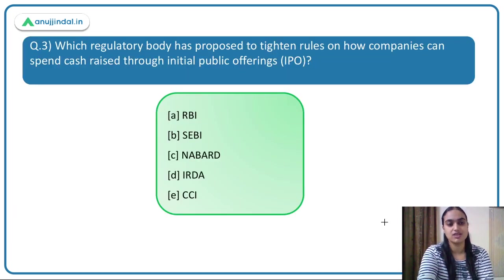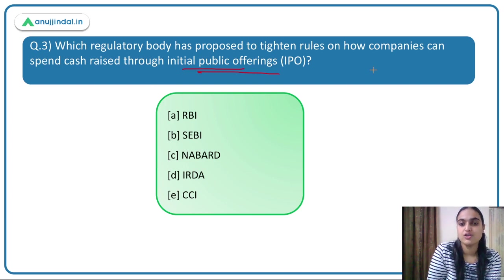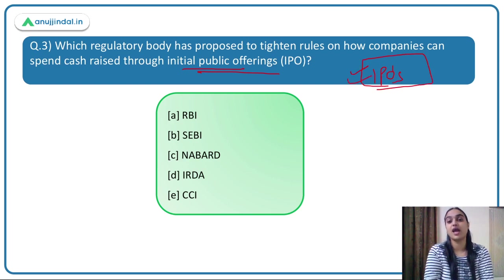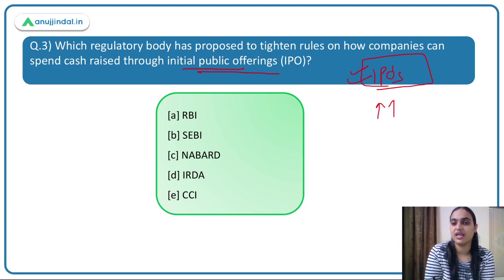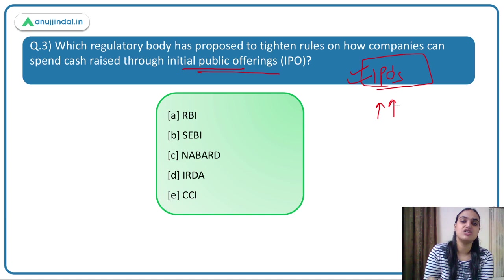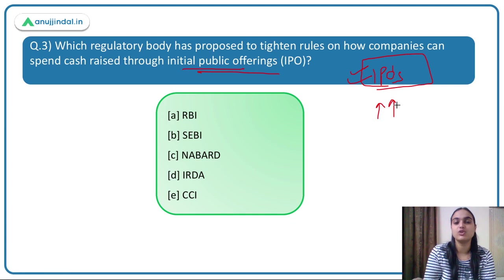Moving to the last question: which regulatory body has proposed to tighten the rules on how companies can spend cash raised through IPOs? These days, many companies are going for IPOs — initial public offerings — raising funding by issuing shares to the market. However, companies are utilizing that money in different risky projects and investments. So there was a need for rules to protect investors from the risks these companies take with IPO-raised funds.